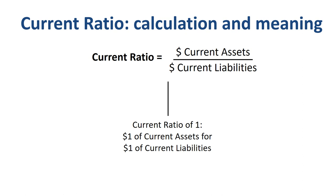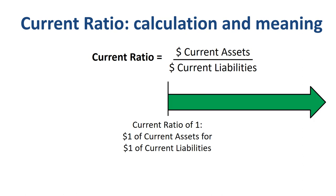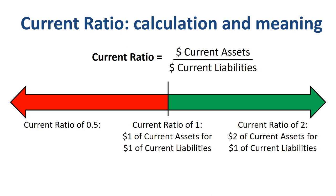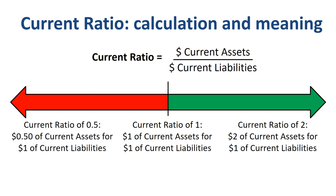If on the next balance sheet, made one quarter later, the current ratio is 2, that means every dollar of current liabilities is covered by $2 of current assets. The opposite could also occur — if the current ratio drops to 0.5, it means every dollar of current liabilities is covered by only 50 cents of current assets on the date of the balance sheet.